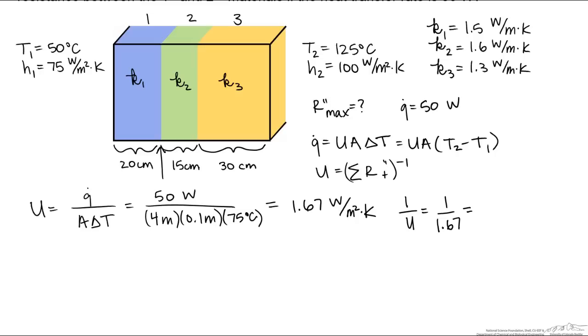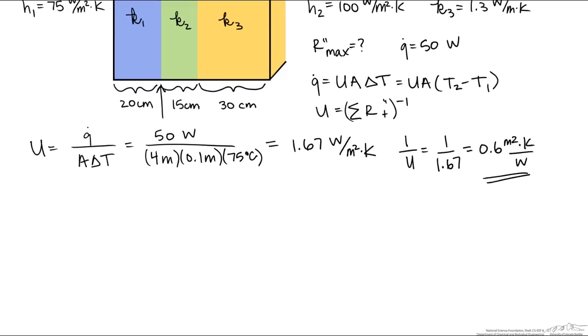So 1 over U, which equals 0.6 meters squared Kelvin per watt, is going to equal the sum of these resistances. So what is the sum equal to?